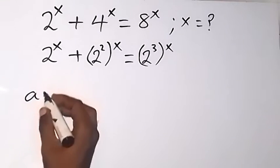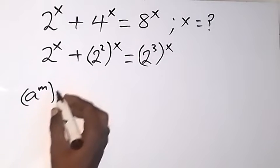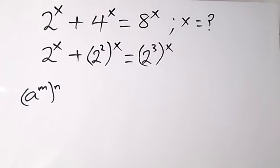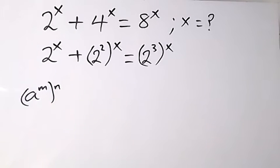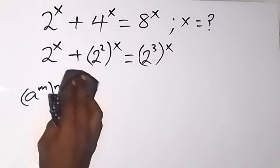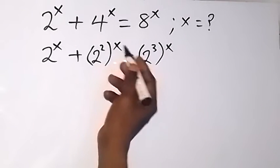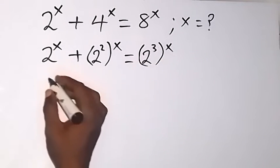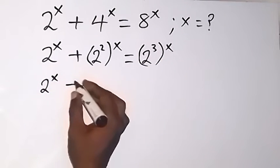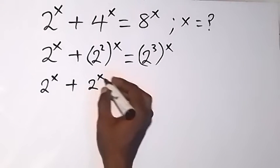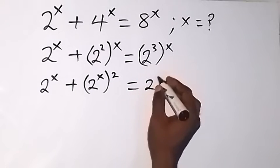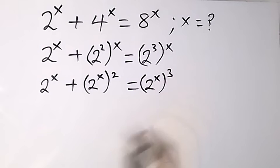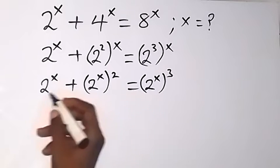One of the laws of indices: when we have a raised to power m, then raised to power n, these powers multiply each other. Since they multiply, we can bring x inside and take the outer exponent outside. So taking 2 outside and bringing x, and taking 3 outside and bringing x, we have 2 raised to power x, plus 2 raised to power x then raised to power 2, equals 2 raised to power x then raised to power 3.